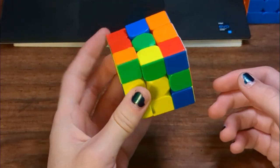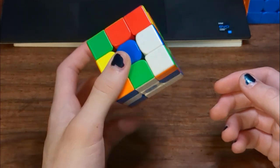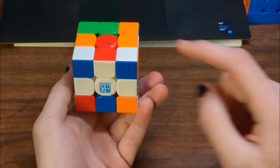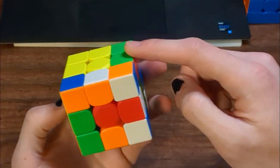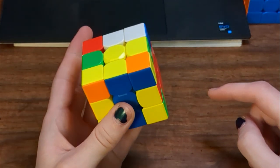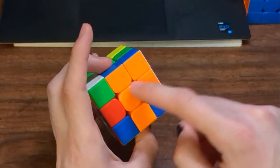So I did a U and then a wide R and a B and rotated back, solved my line with this cross edge there, and then I inserted this pair in the back, and then I saw this, so I cancelled into that R2, and then solved that block on the left.